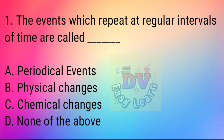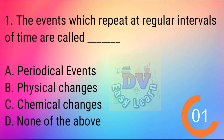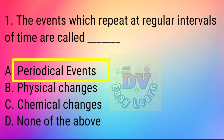Question No. 1: The events which repeat at regular intervals of time are called — Correct answer: Periodical events.